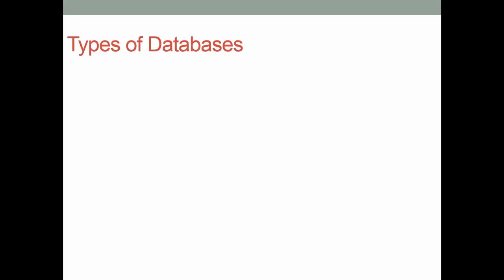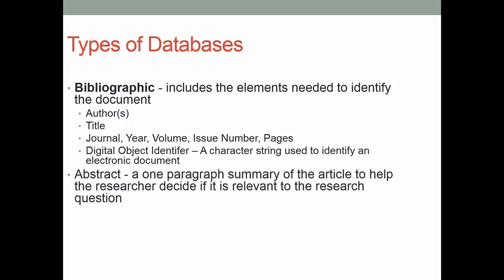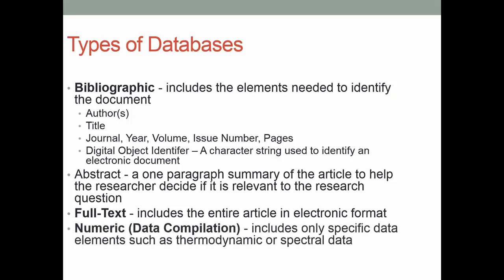Types of databases: a bibliographic database includes the elements needed to identify a document — the author, title, name of the journal, year, and so on — and now there's something called a digital object identifier, a character string used to identify the electronic document. The abstract is a one-paragraph summary of the article — we saw that in the Journal of Membrane Science, and databases have abstracts as well. A full-text database includes the entire article in electronic format. A data compilation includes only specific data elements such as thermodynamic or spectral data.